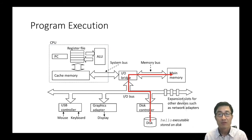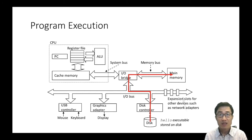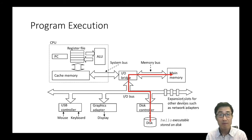Let's talk about what happens inside the system when we run our Hello World program. Before we run the program, the Hello executable file resides in disk. As soon as we press the Enter key, the Hello executable file is loaded to main memory via the IO bus and memory bus.